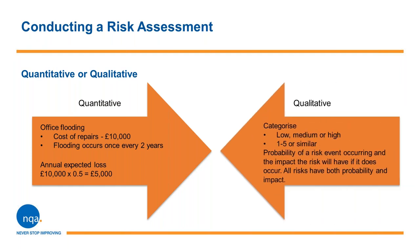The second method, qualitative analysis, uses scales of qualifying attributes to describe the magnitude of potential consequences — for example, low, medium, high — and the likelihood that those consequences will occur. An advantage of qualitative analysis is the ease of understanding by all relevant personnel, while a clear disadvantage is the dependence on subjective choice of scale. These scales can be adapted or adjusted to suit the circumstances, and different descriptions can be used for different risks. Qualitative risk analysis can be used as an initial screening activity to identify risks requiring more detailed analysis, where this kind of analysis is appropriate for decision-making, and where numerical data or resources are inadequate for quantitative analysis. Qualitative analysis should use factual information and data where available.